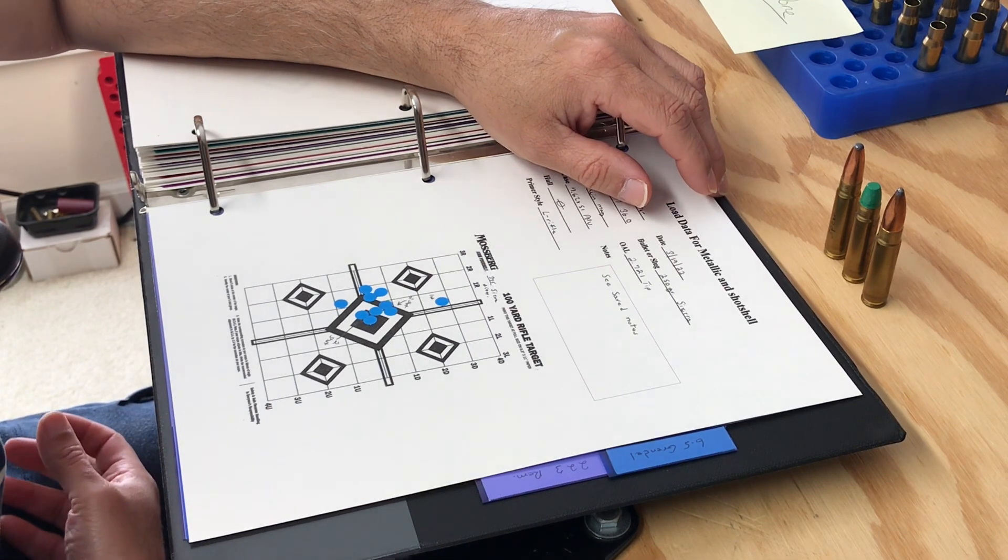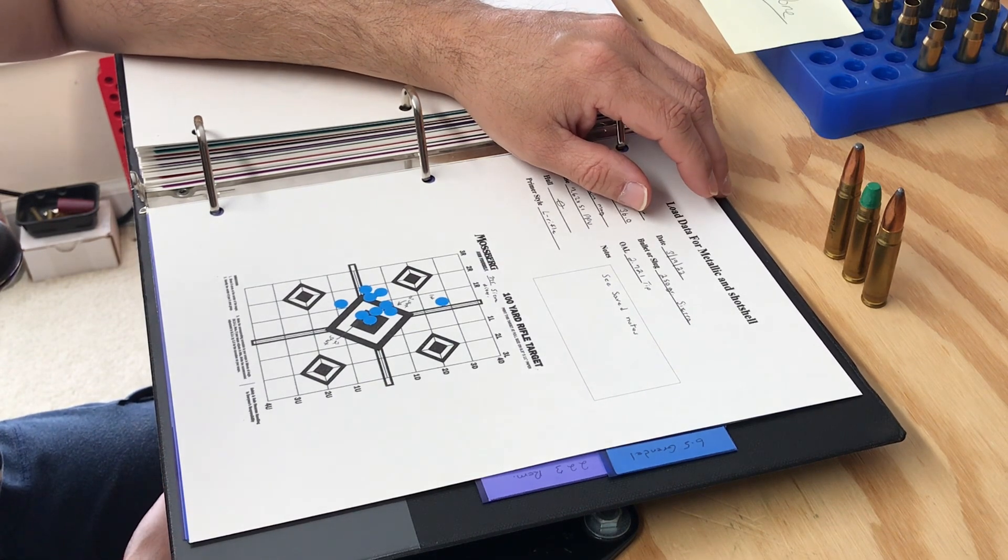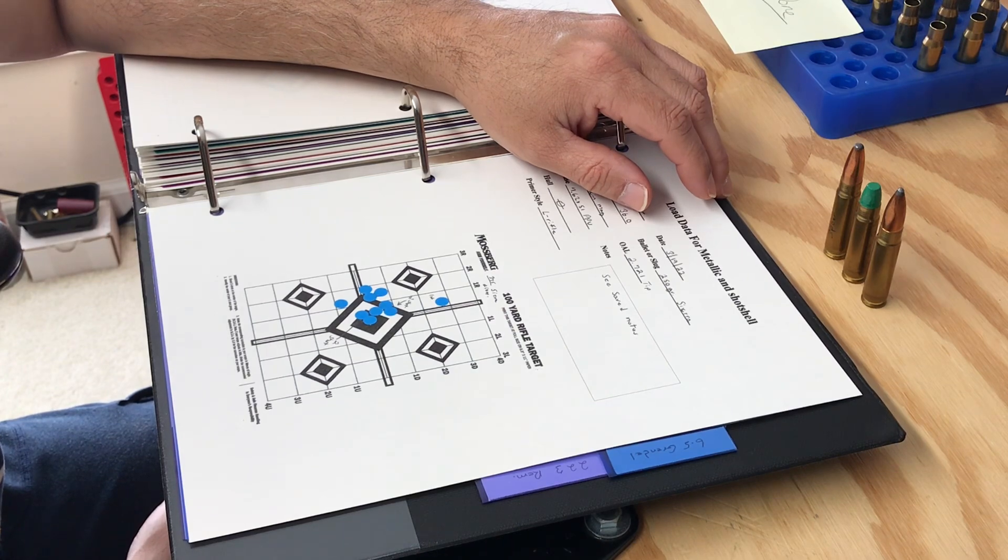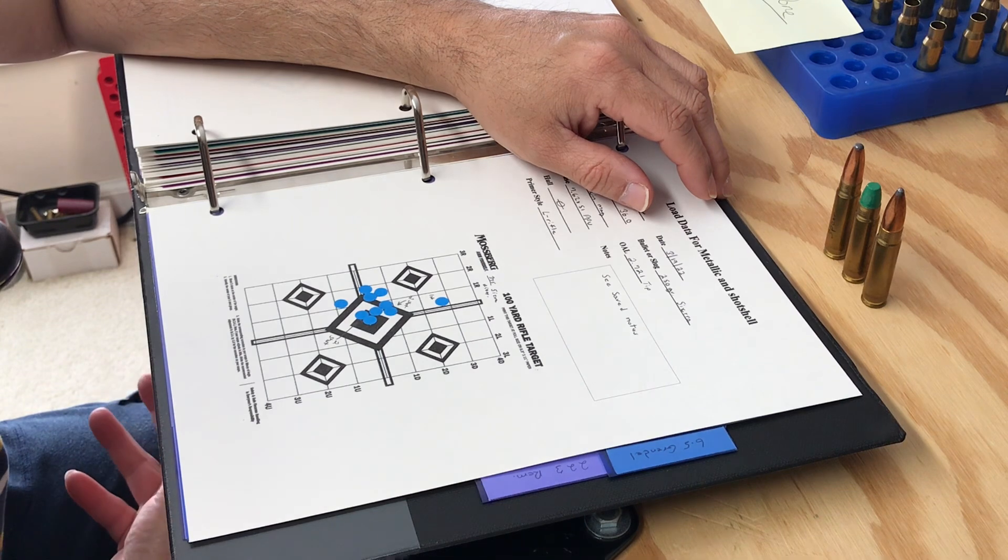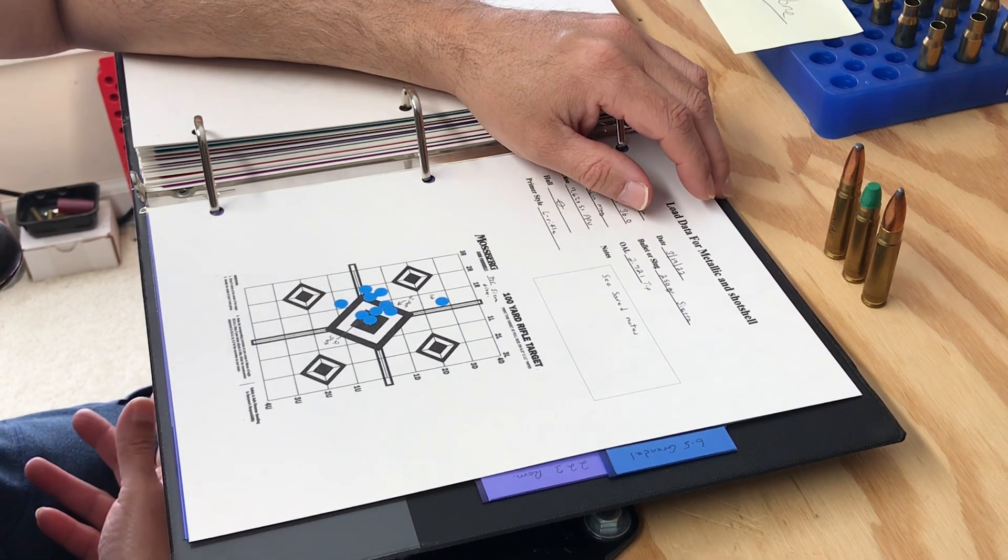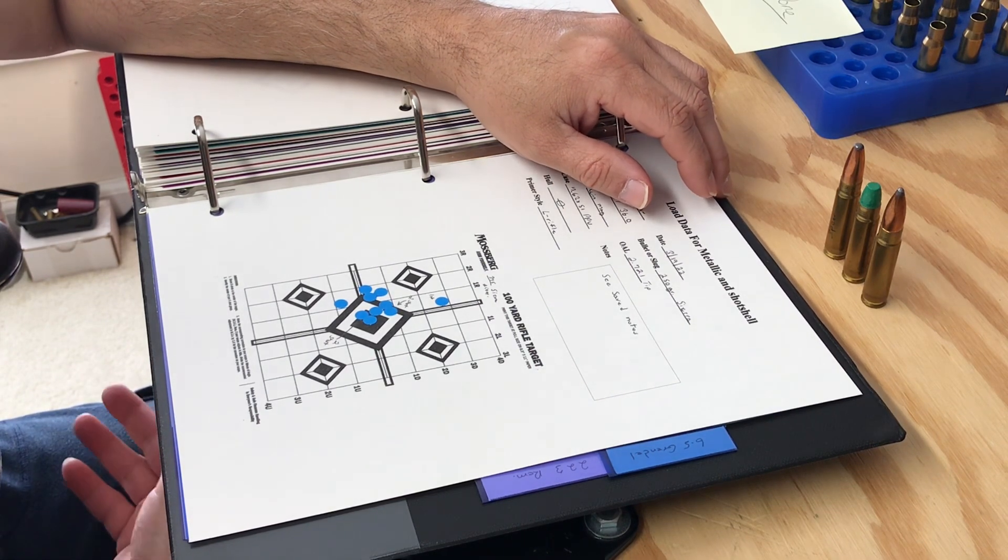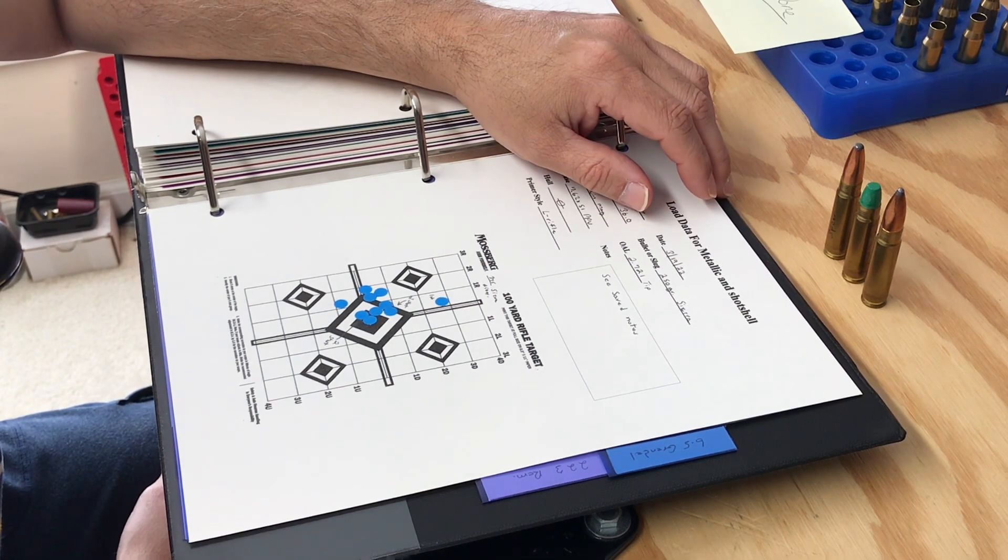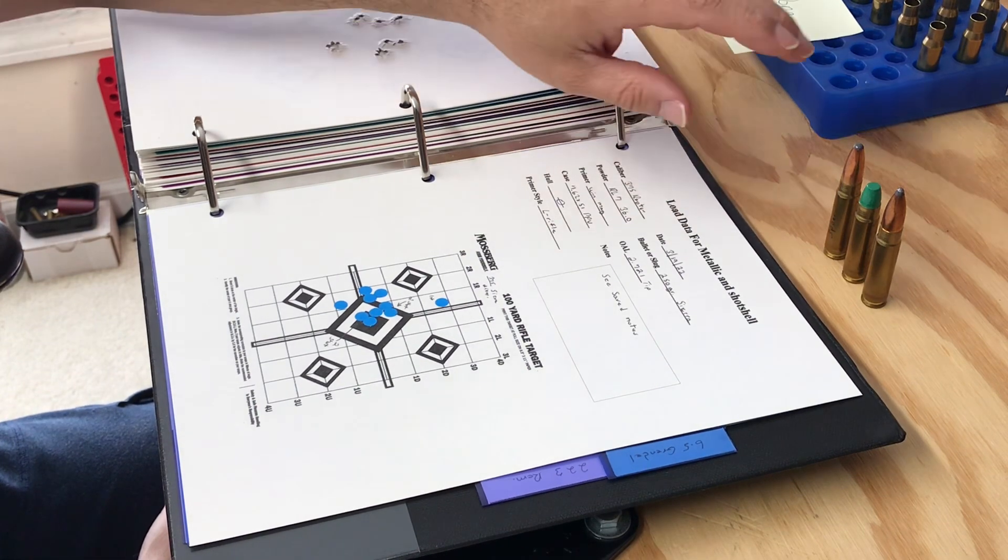Their load data is there, but it's on the high side for me personally because they're using Winchester brass. If I'm not mistaken, their load development used magnum primers for all their load data. Will they work with regular large rifle? I don't know. I haven't tried it.